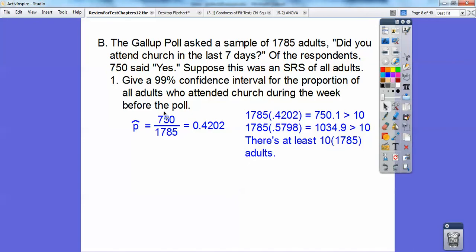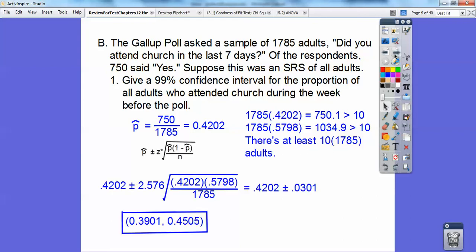So first I had to find P hat. P hat is how many who said they did out of how many that were polled. So it's 0.4202. And then so you do your sample size times 0.4202 and then times 1 minus 0.4202. And then both of those are definitely greater than 10 right there. And there's definitely at least 10 times as many adults in our population. So we're safe to go ahead and proceed.